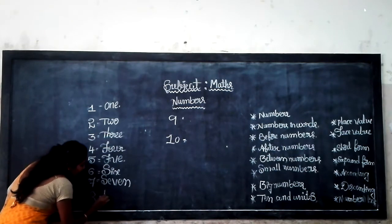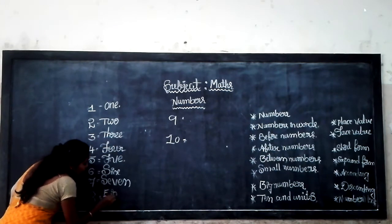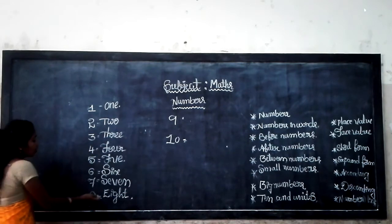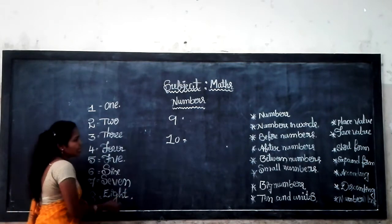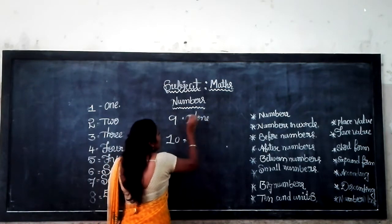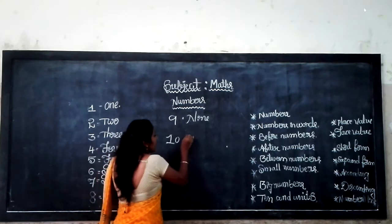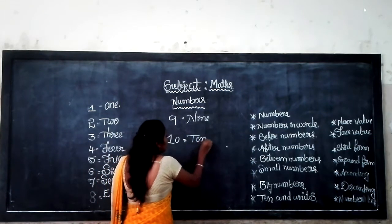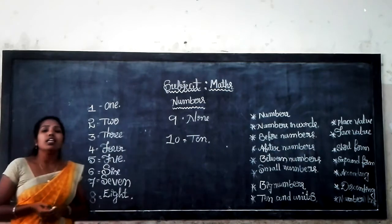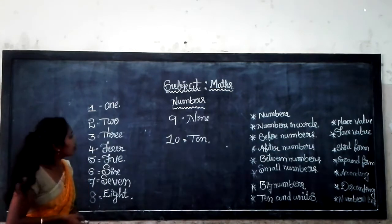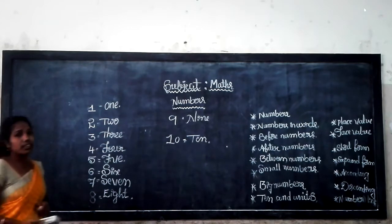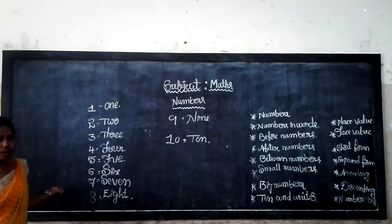Then number 8 — E-I-G-H-T. Number 9 — N-I-N-E. And the last one — number 10. I want you to understand the numbers in words.